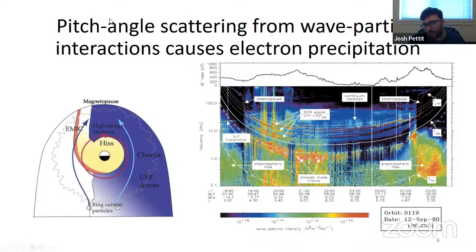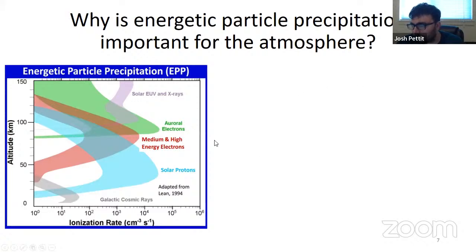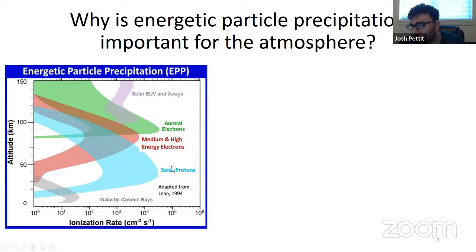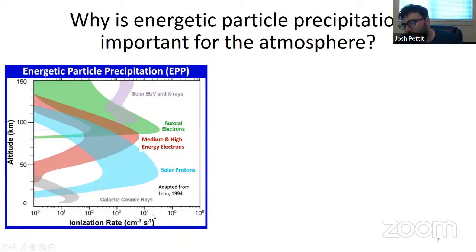The focus of this talk is: once the electrons get into the atmosphere, what happens then? So the motivation is why is it important for the atmosphere? This plot summarizes all of the particle precipitation from galactic cosmic rays through solar EUV and X-rays. This was adapted from Lean 1994, because this medium and high energy electron red shading was never in there before. Previously, it was thought that the main impacts from particle precipitation were protons and auroral electrons.